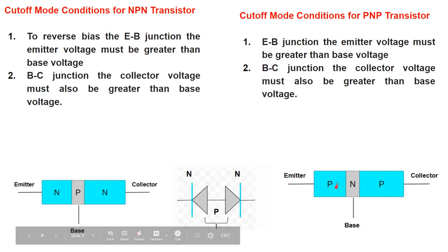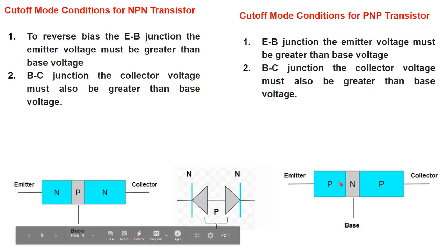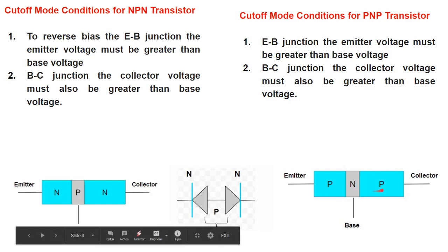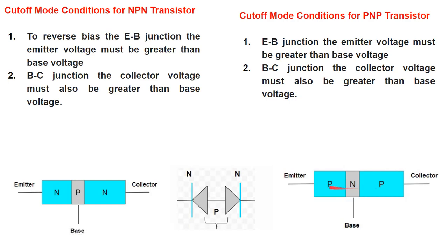Here you can see that P is the emitter and base is N type. To put the emitter-base junction in reverse bias mode, definitely the emitter should be at low potential and base should be at high potential, then this junction will be reverse biased. And for the base-collector junction, same is the case — the collector should be at low potential and base should be at high potential. In other words, base is at high potential as compared to emitter as well as compared to collector. Then the PNP transistor will be in cutoff mode.